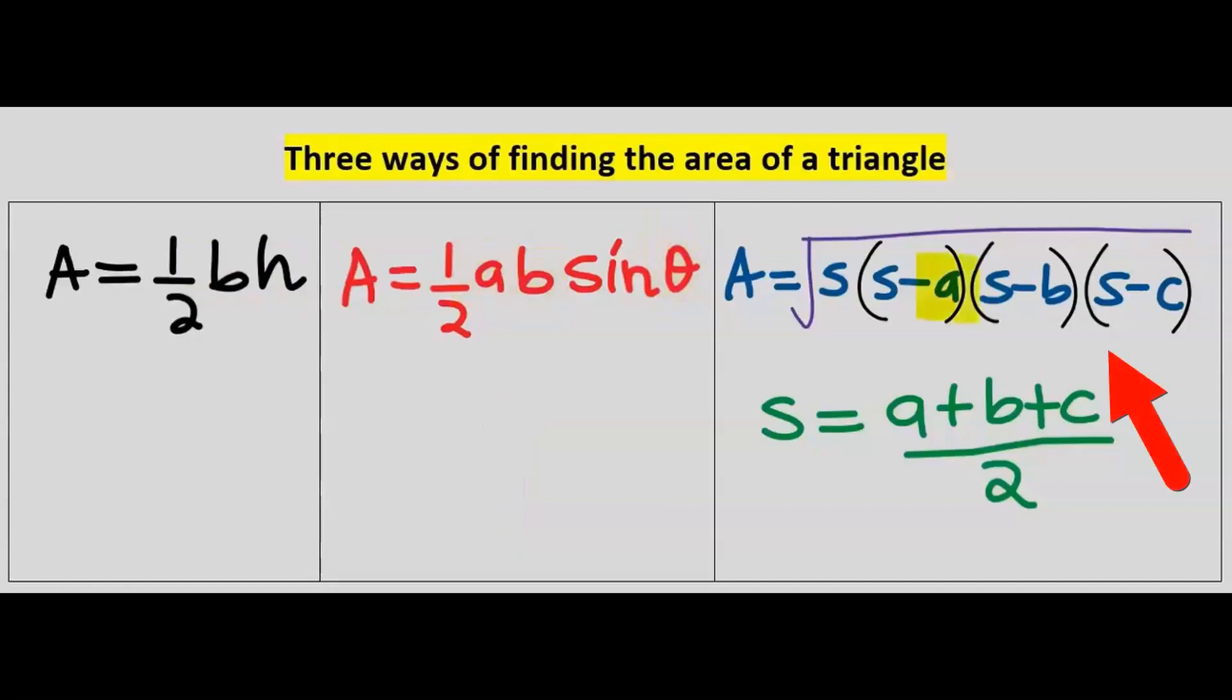The next one is when you have three sides, no height and no angle, where s is the semi-perimeter, which is the addition of the three sides divided by two.